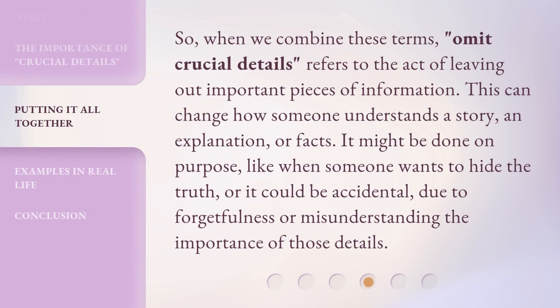So, when we combine these terms, 'omit crucial details' refers to the act of leaving out important pieces of information. This can change how someone understands a story, an explanation, or facts. It might be done on purpose, like when someone wants to hide the truth, or it could be accidental, due to forgetfulness or misunderstanding the importance of those details.